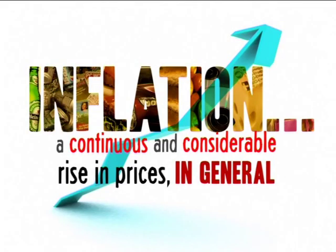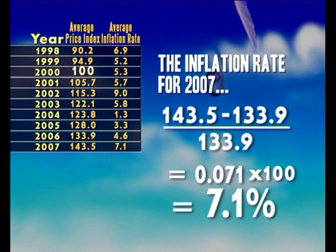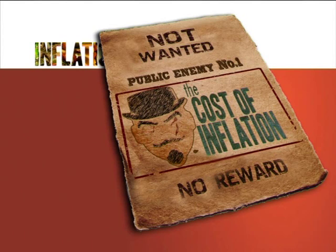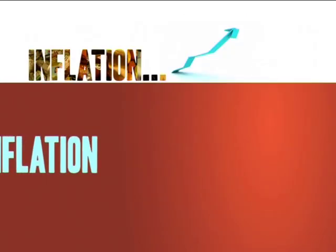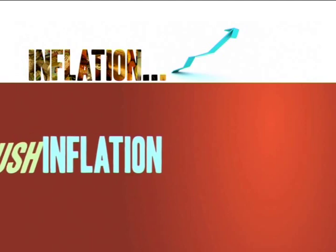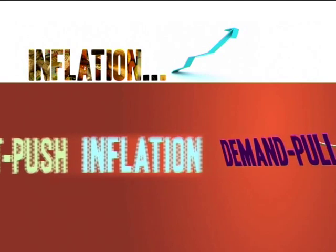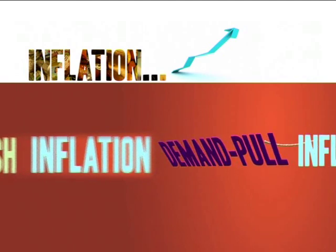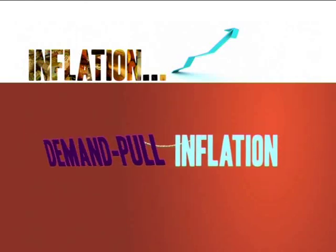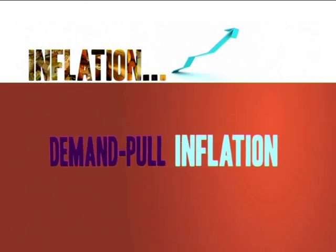Now that we know what inflation is, how it's measured and the cost of inflation, let's look at the causes. There are two main causes of inflation: cost push inflation and demand pull inflation. To explain the difference, we'll make use of our aggregate demand and supply tools.